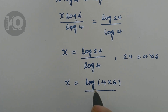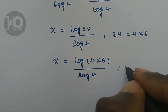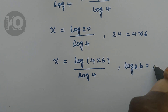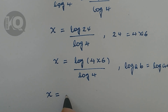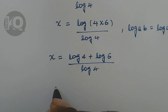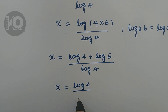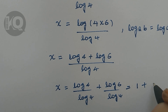So X equals log of 4 times 6, divided by log 4. From the rule of logarithm, log of a times b is equal to log of a plus log of b. Applying this rule, X equals log of 4 plus log of 6, divided by log 4. Separating each term, X equals log 4 divided by log 4, plus log 6 divided by log 4.